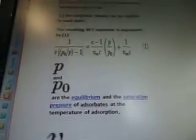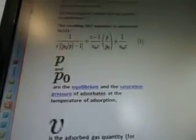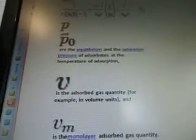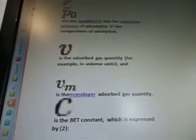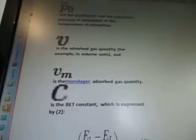The resulting BET equation is expressed by equation 1. This is the equation here, and it's quite a big one. P and P0 are the equilibrium and saturation pressure of adsorbents at the temperature of adsorption. V is the adsorbed gas quantity, for example in volume units, and Vm is the monolayer adsorbed gas quantity. And C is the BET constant, which is expressed by equation 2.